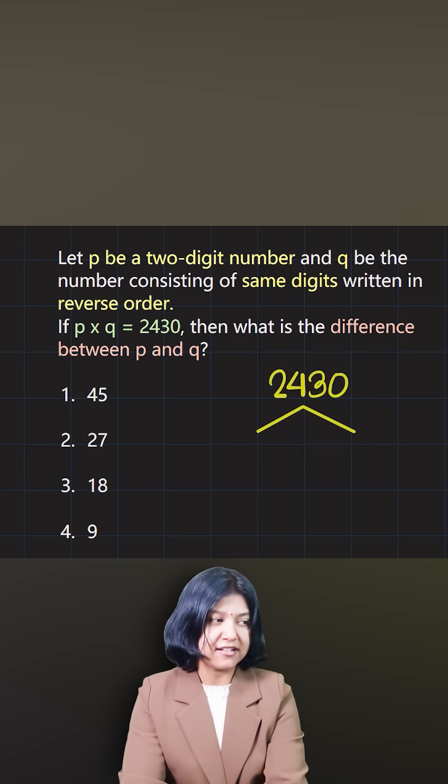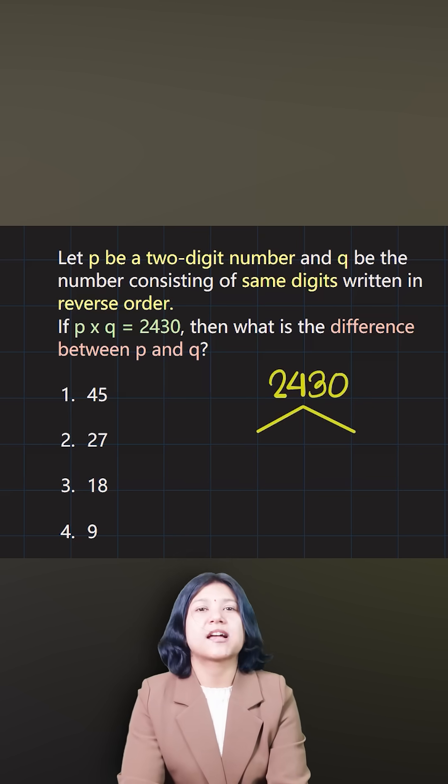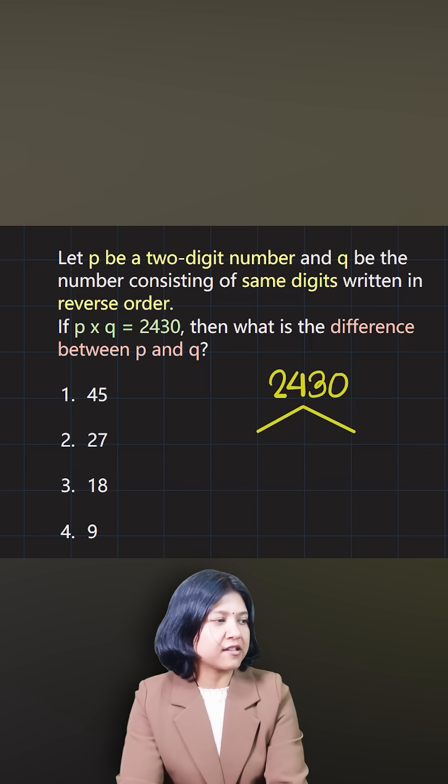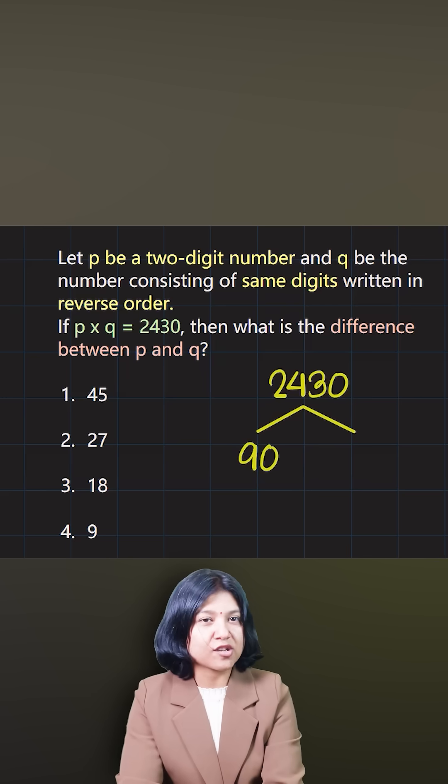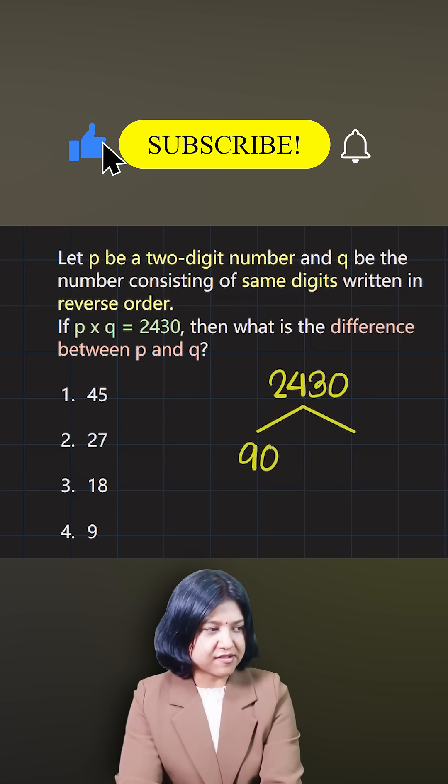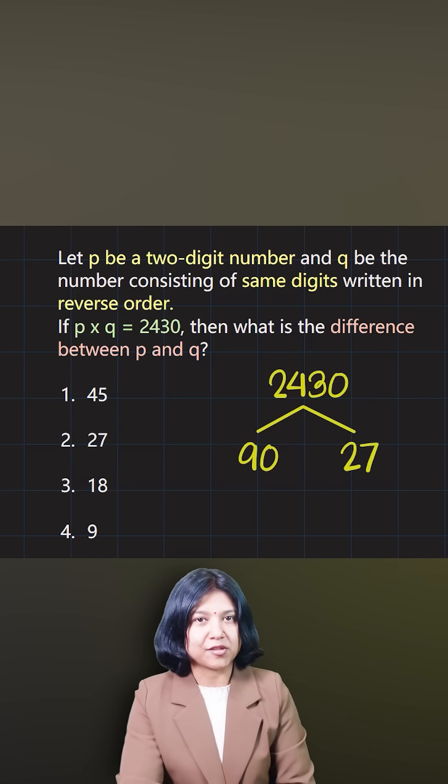I can say that because the sum is nine here and it's ending with zero, one of the factors can be 90. So nine times how much is 2430? Nine times two is 18, and then nine times seven is 63.